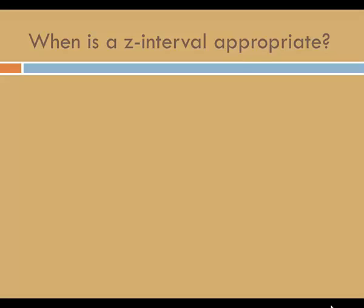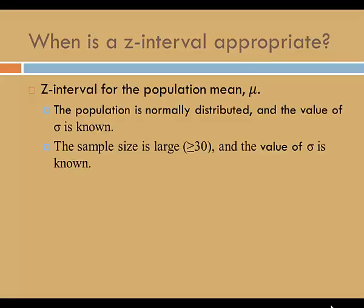So when is a z-interval appropriate? A z-interval is used to estimate the population mean, mu, when the population is normally distributed and the value of sigma is known,